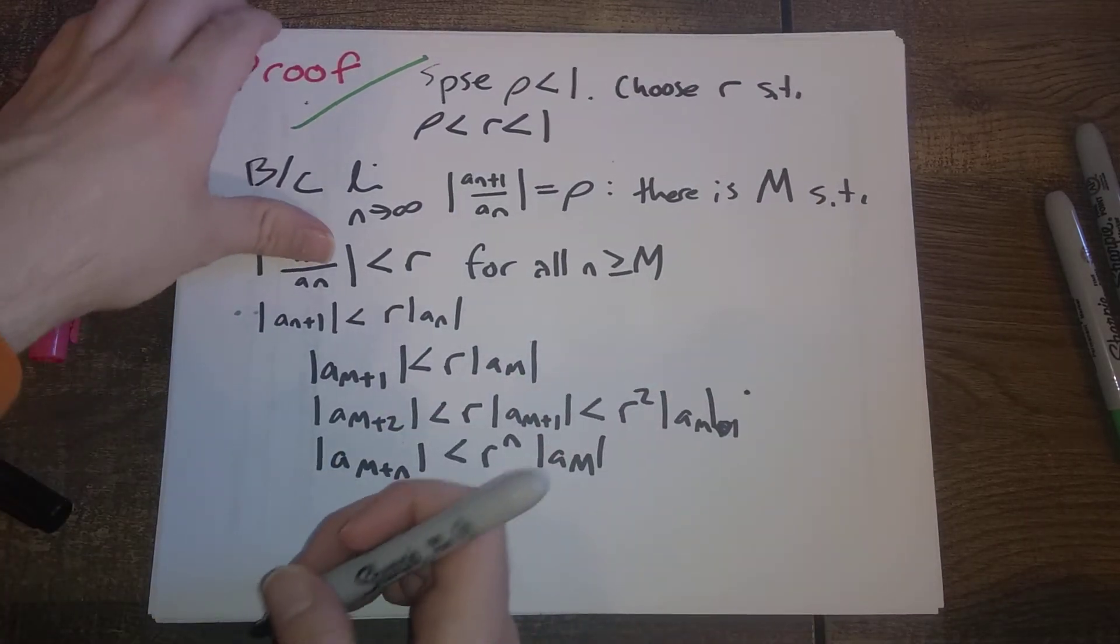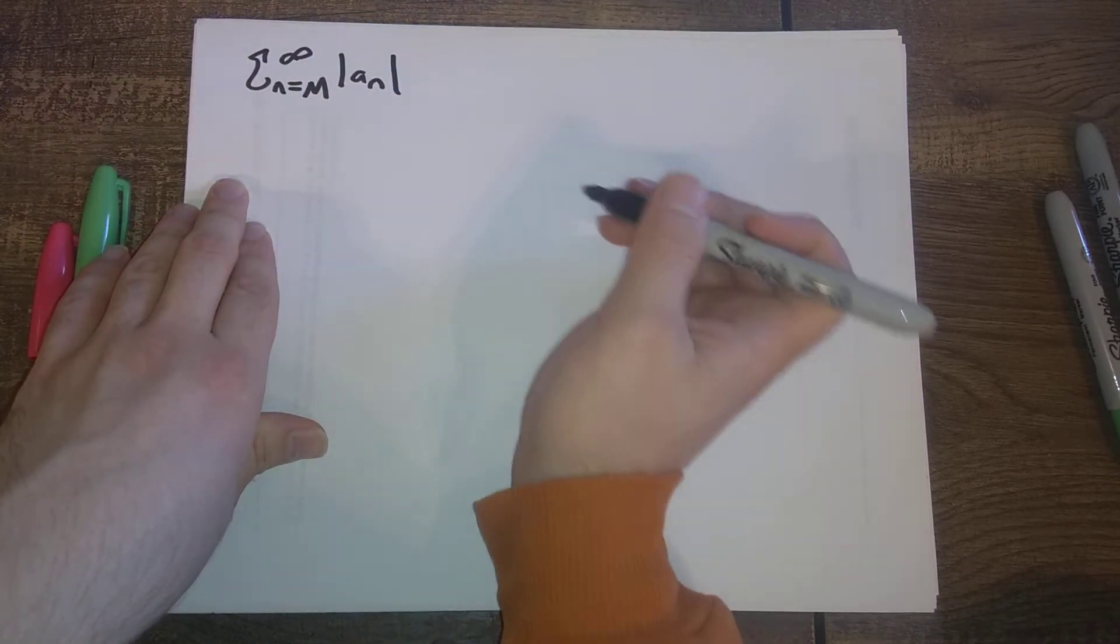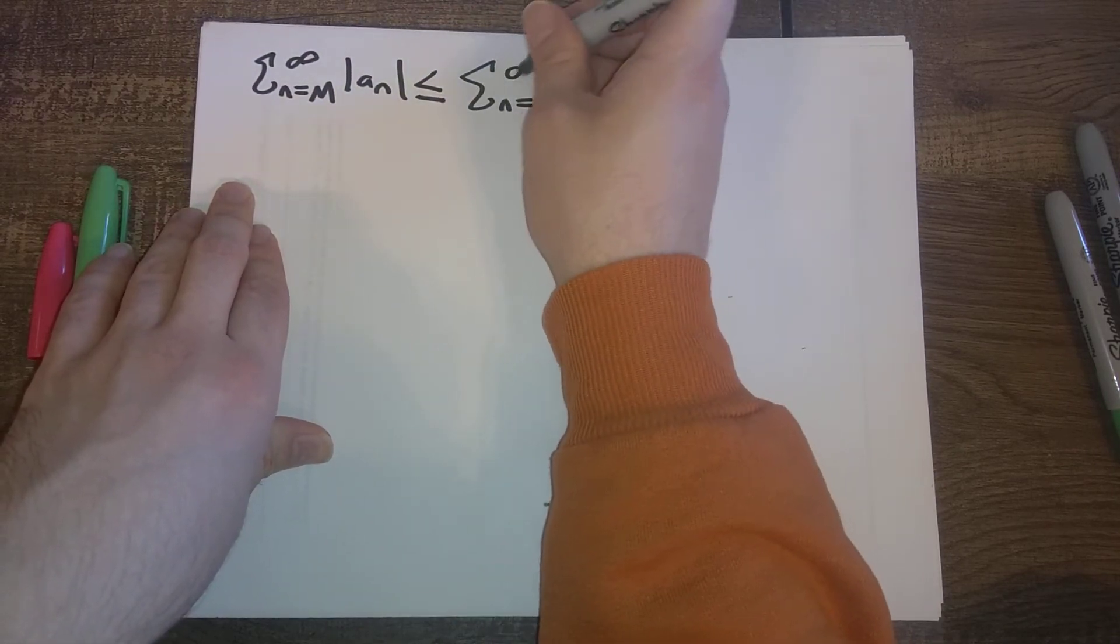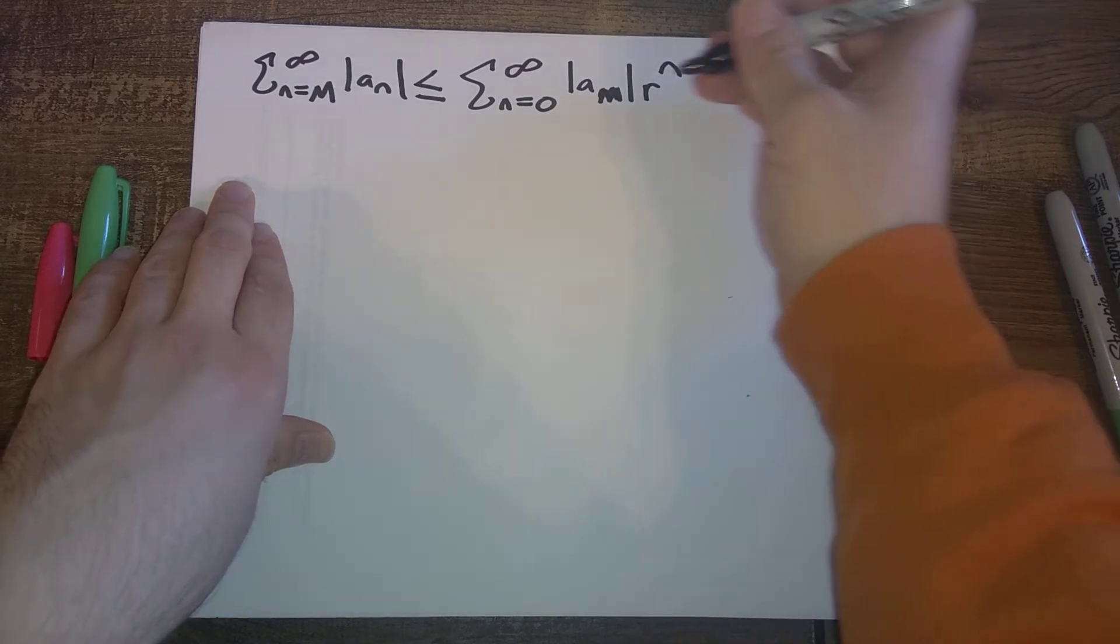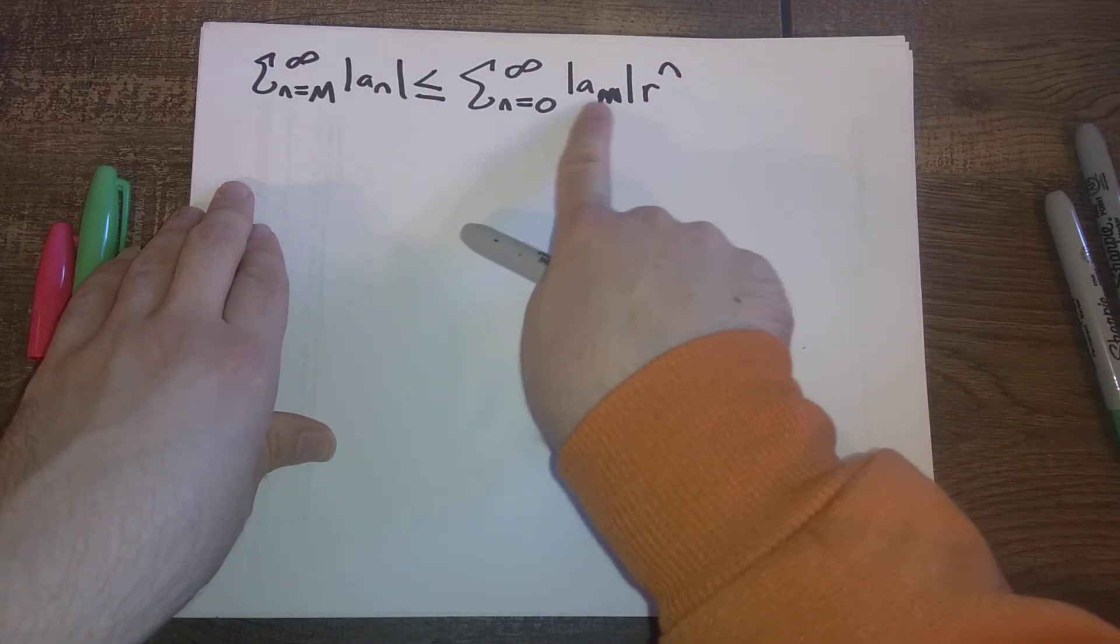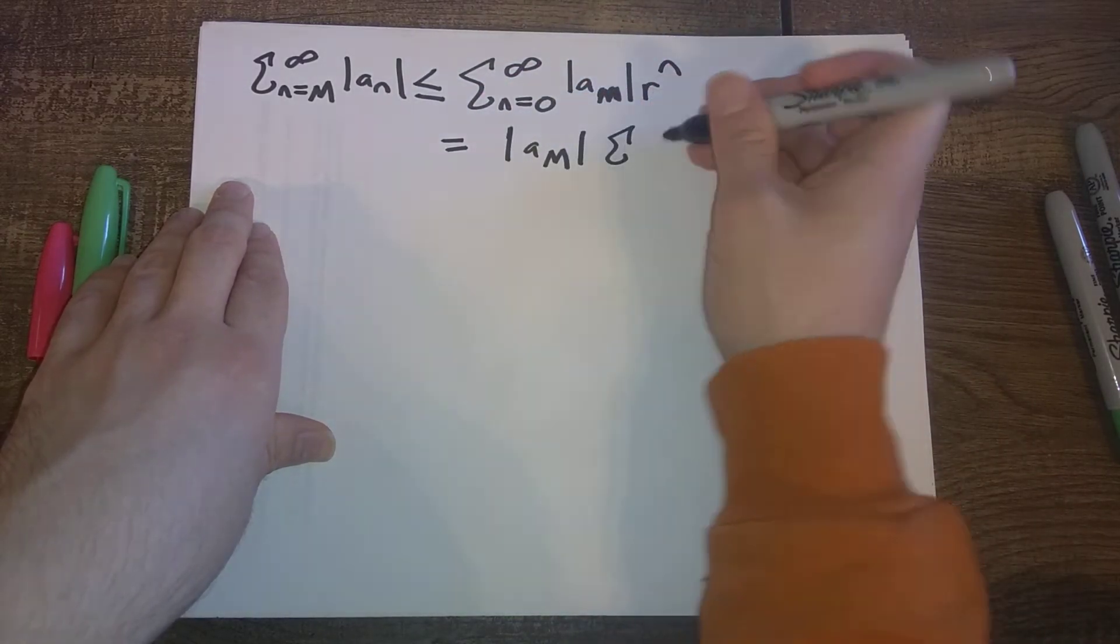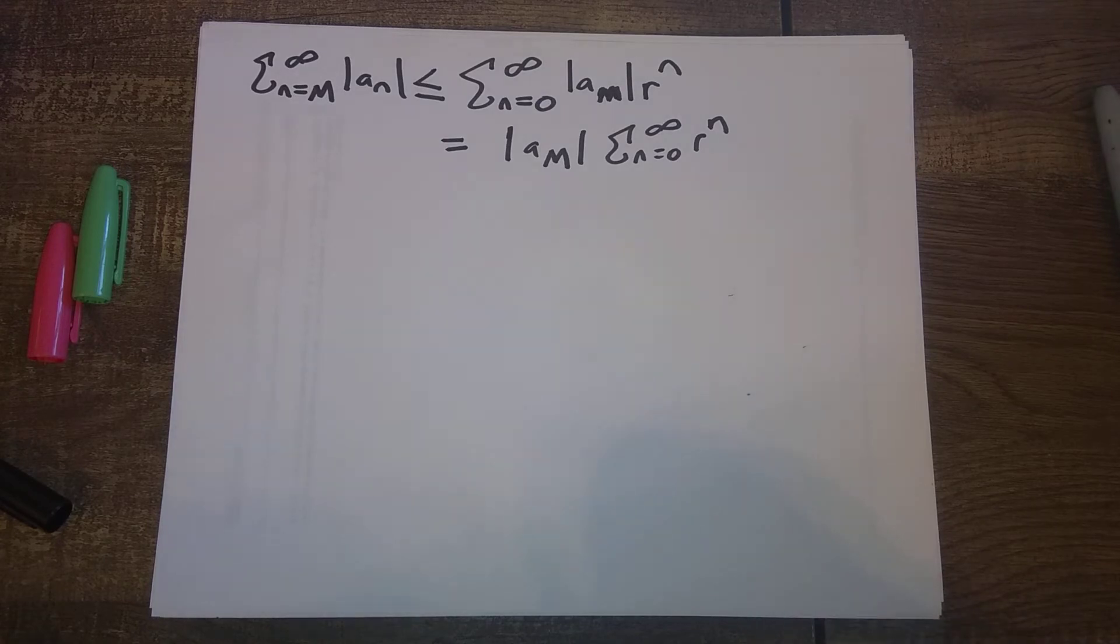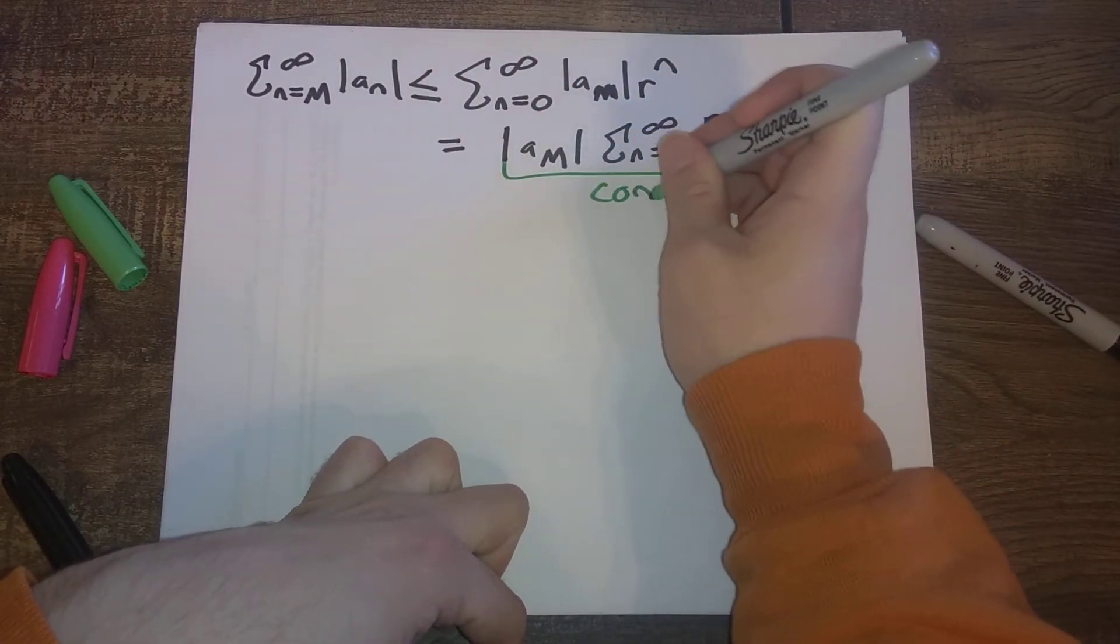So this allows us, if we use this fact, this allows us to observe that the sum from n from M to infinity of the absolute value of a_n is less than or equal to, after doing some re-indexing, the sum from n from 0 to infinity of the absolute value of a_M times R to the n. But this a_M, that's a constant, so we can move it outside of the sum, and R, by assumption, R is something that is strictly less than 1, so this whole thing converges.